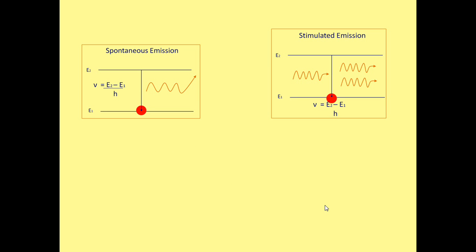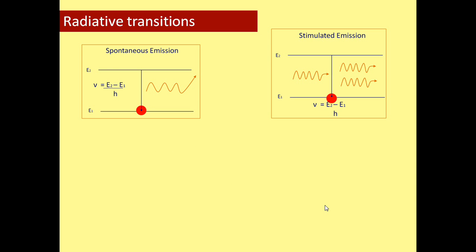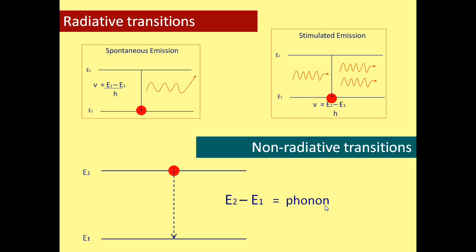Spontaneous and stimulated emissions result from a radiative transition because, as a result of the atom moving to a lower energy level, electromagnetic radiation is emitted. By contrast, in non-radiative transitions, excess energy is dissipated as phonons, which are a way of quantifying the vibrational properties of the material. This means the energy goes into heating the material.